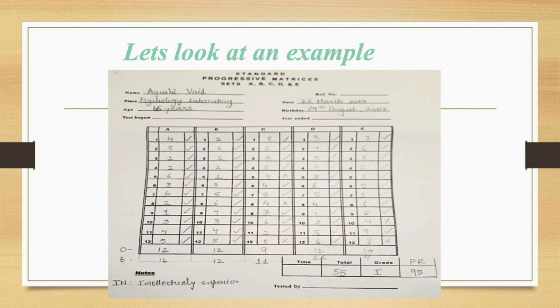In Set A the subject got 12, expected score 12, there is no discrepancy, zero discrepancy. Set B: 12, 12, no discrepancy, 0. Then in Set C, the expected score was 11 and the subject got 9, so a discrepancy of minus 2. In Set D, expected score 11, subject got 12, discrepancy of plus 1. In Set E, expected score was 9, subject got 10, so a discrepancy of plus 1.